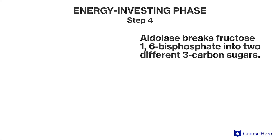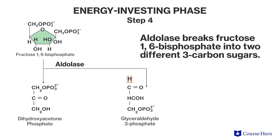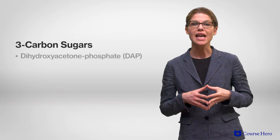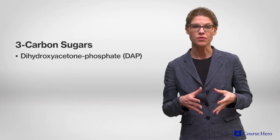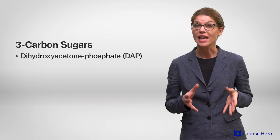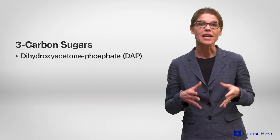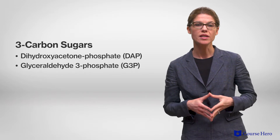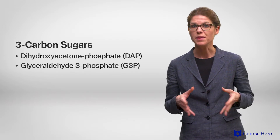Step four: aldolase breaks down fructose 1,6-bisphosphate into two different three-carbon sugars, dihydroxyacetone phosphate, also known as DAP, and glyceraldehyde 3-phosphate, known as G3P.